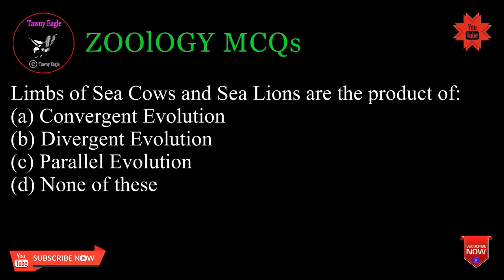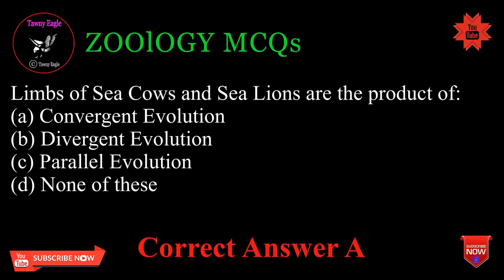Limbs of sea cows and sea lions are the product of: A. Convergent evolution, B. Divergent evolution, C. Parallel evolution, D. None of these. Correct answer: A.